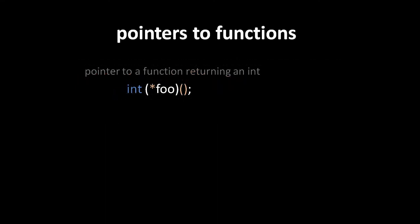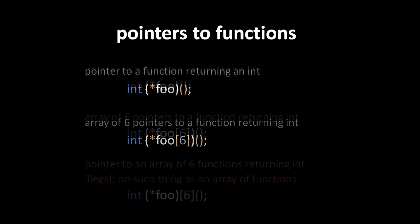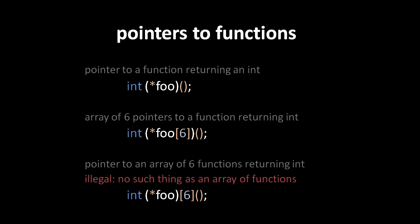What we can create, however, are pointers to functions. Reading inside out, foo is a pointer to a function taking no arguments and returning an int. And because we can create arrays of pointers, we can create arrays of pointers to functions. Here, foo is an array of 6 pointers to a function taking no arguments and returning int. But again, there's no such thing as an array of functions, and so we can't create pointers to arrays of functions.